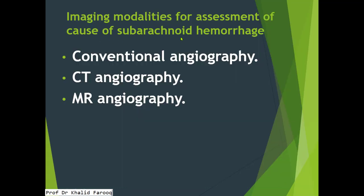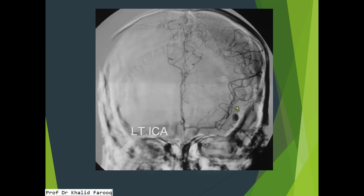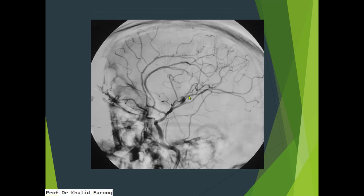Imaging modalities for the assessment of subarachnoid hemorrhage: number one, conventional angiography; number two, CT angiography; and number three, MR angiography. Here we have examples of conventional angiography where we can see an aneurysm in branches of the left middle cerebral artery. A smaller aneurysm is noted in the branches of the left MCA in the same example.